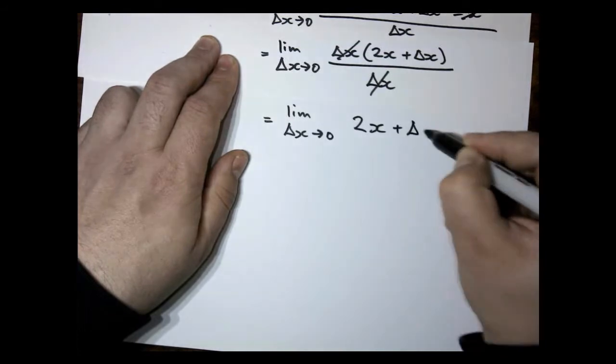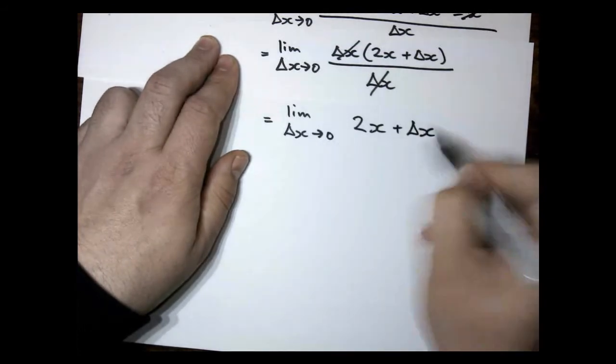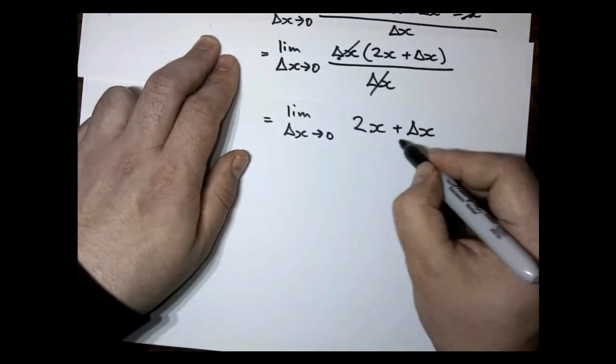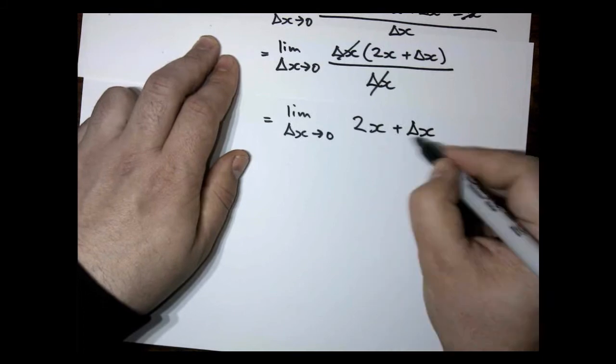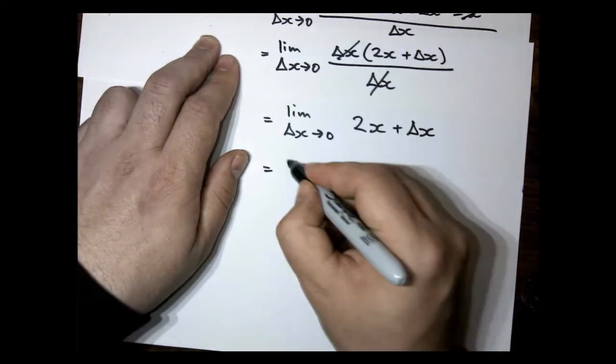Now this is going to be done. This is just approaching zero, so we can effectively just cancel that out. This is going to disappear, so we have 2x.